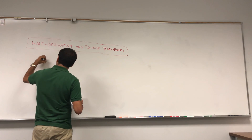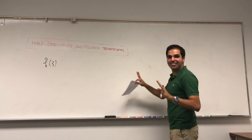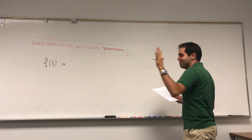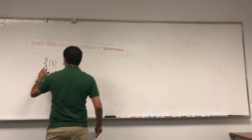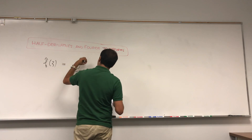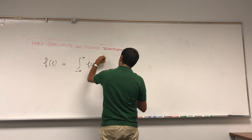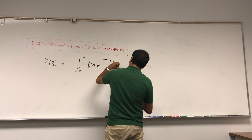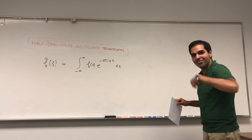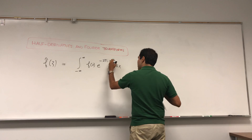Let me remind you what the Fourier transform is. The Fourier transform f-hat of xi equals this integral: the integral from minus infinity to infinity of f(x) times e to the minus 2πi·x·ξ dx. You're taking the function f, multiplying it by this circular exponential, and integrating with respect to x. The only place ξ appears is in that exponent.